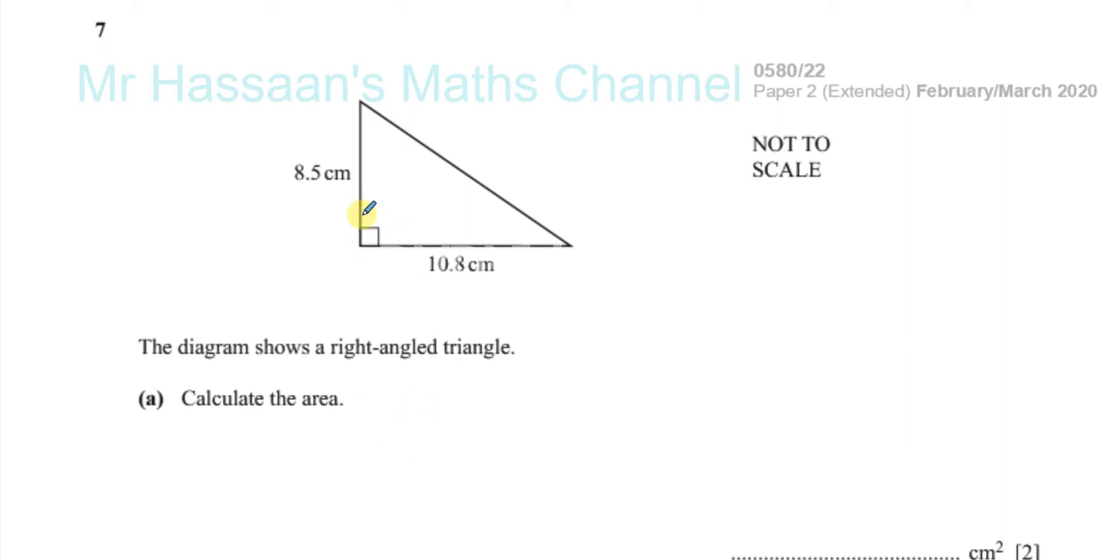Now, that's pretty simple. As it's a right-angled triangle, remember, the area of a triangle is equal to a half times the base times the vertical height. Now, this is the vertical height of the triangle.